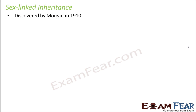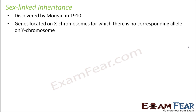This was discovered by Morgan in 1910 while he was doing experiments with the red-eyed and the white-eyed Drosophila — the experiments we saw in the previous segments. He could find that there are certain inherited traits for which the corresponding genes are present exclusively on the X chromosomes. Since they are present on the X chromosome, in the case of males they do not have their counterpart on the Y chromosome. So genes located on X chromosomes for which there is no corresponding allele on the Y chromosome make a huge difference in the way these traits get inherited.